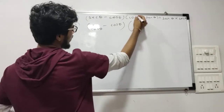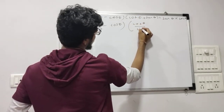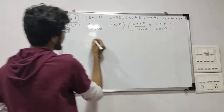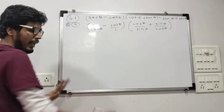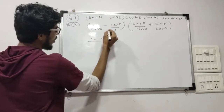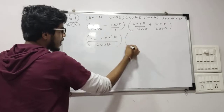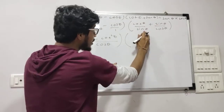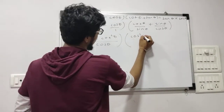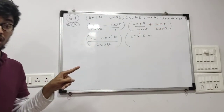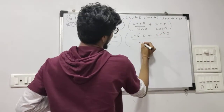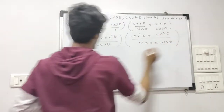So separate the brackets. Cot theta is cos theta upon sin theta, and tan theta is sin theta upon cos theta. Now solve — the denominator is not the same, you cannot subtract directly. So cross multiply: 1 minus cos squared theta upon cos theta, and for the bracket with cot and tan — cross multiply to get cos squared theta plus sin squared theta upon sin theta into cos theta.